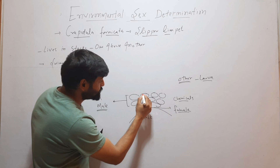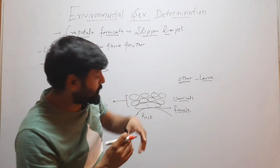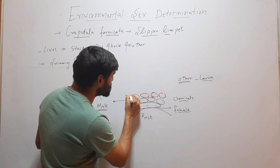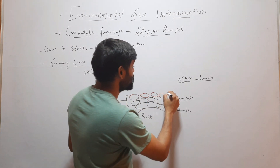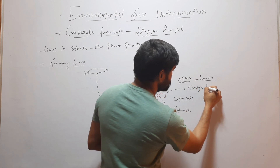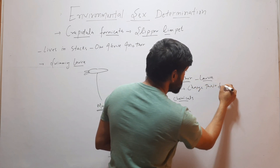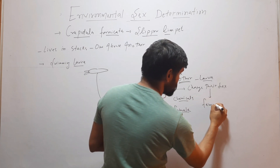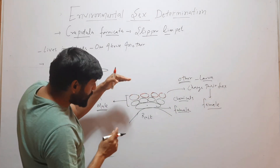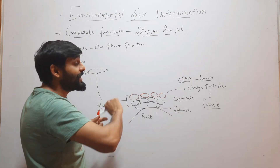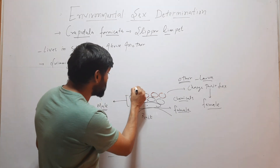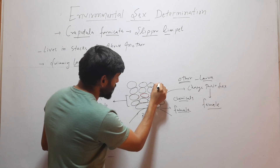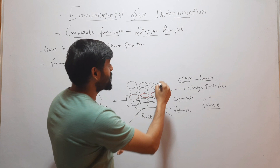After some time, the upper organisms will change their sex. These upper organisms will change their sex and become female — initially they were male. Then the upper ones become female, and they attract others who come and settle on top of them, and after settling they will become male.